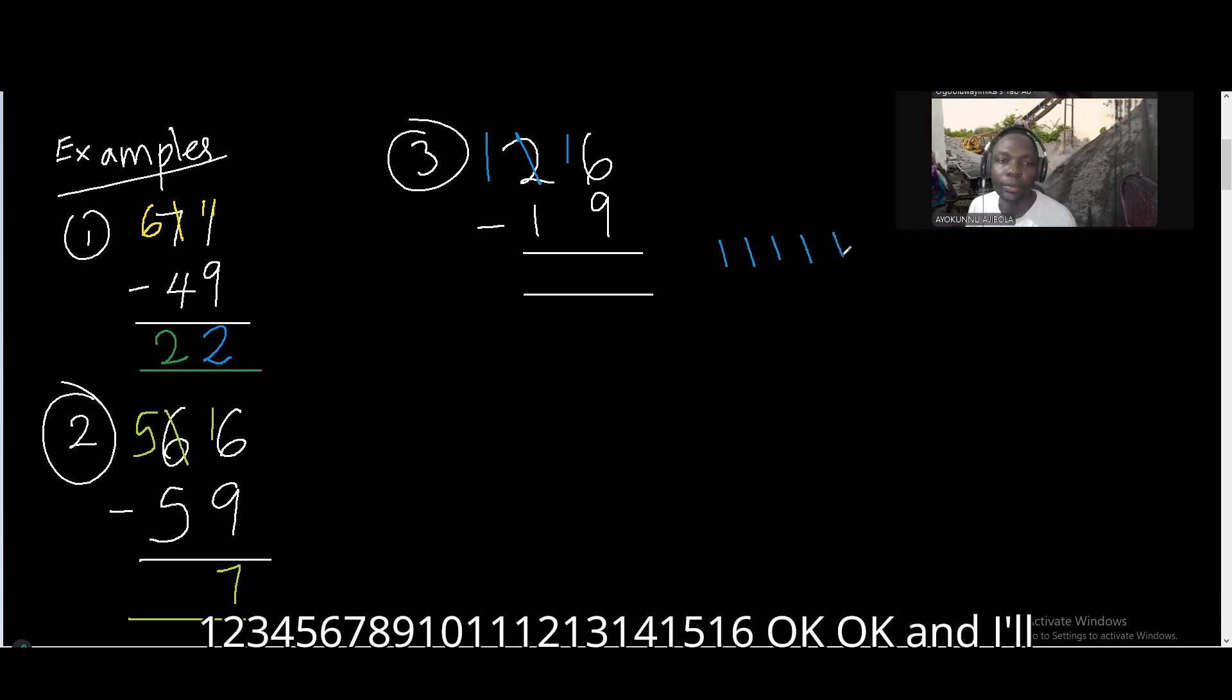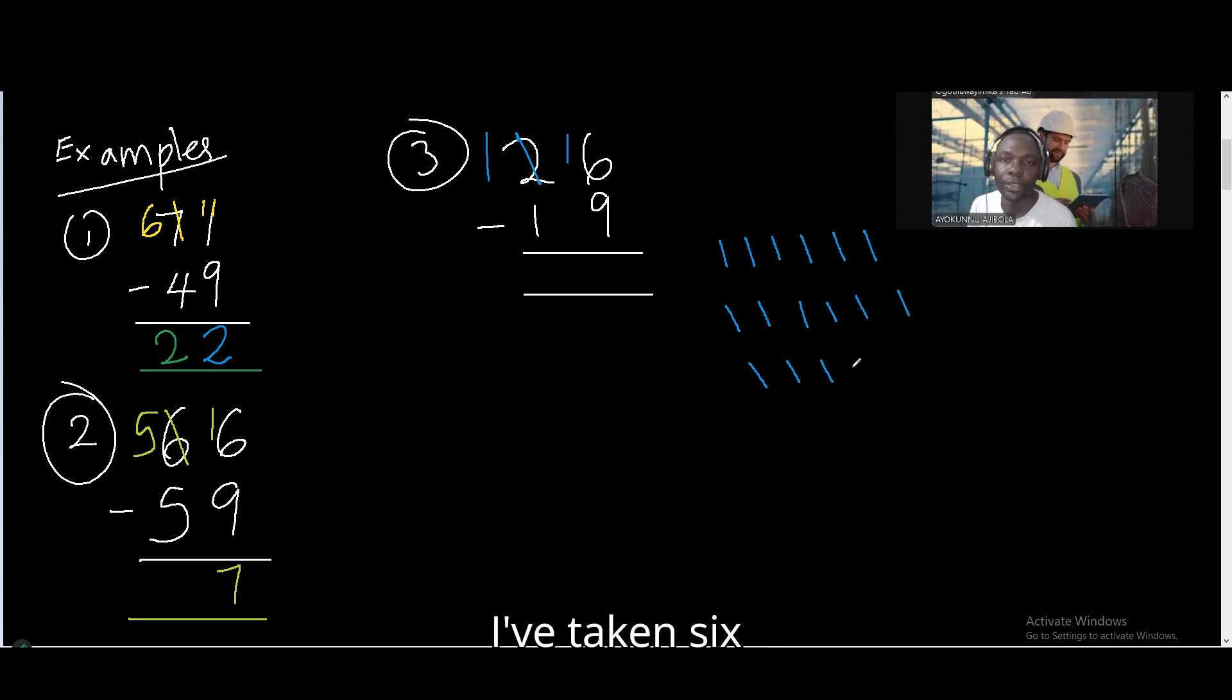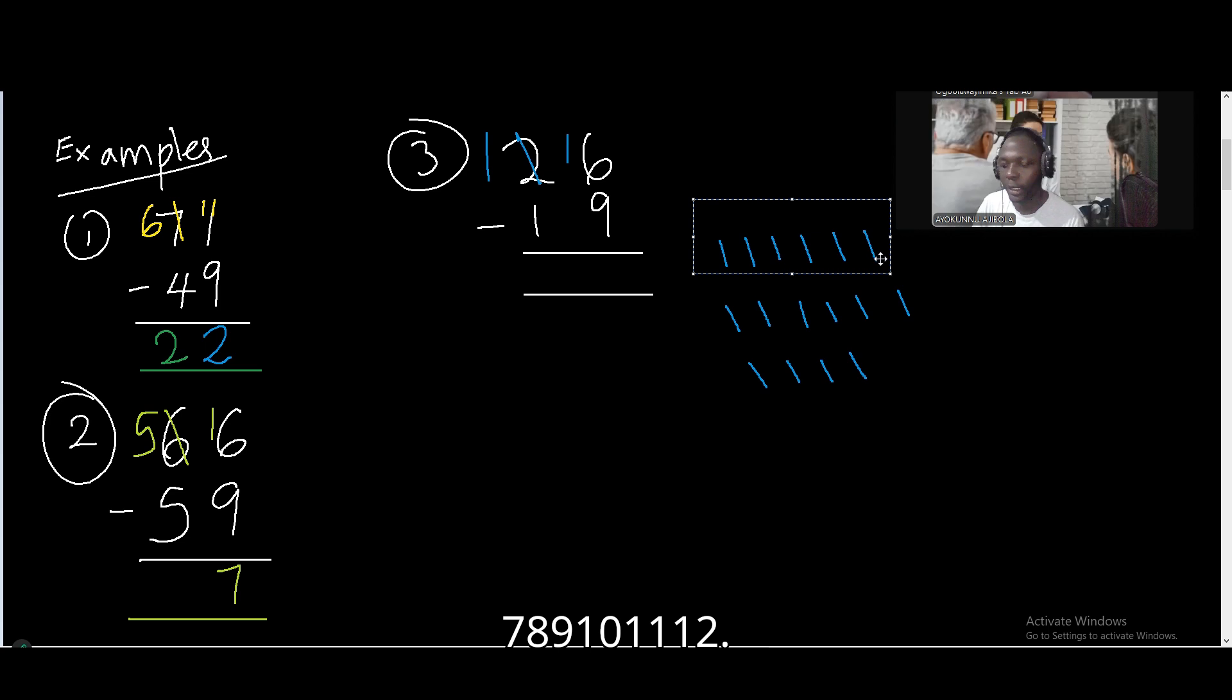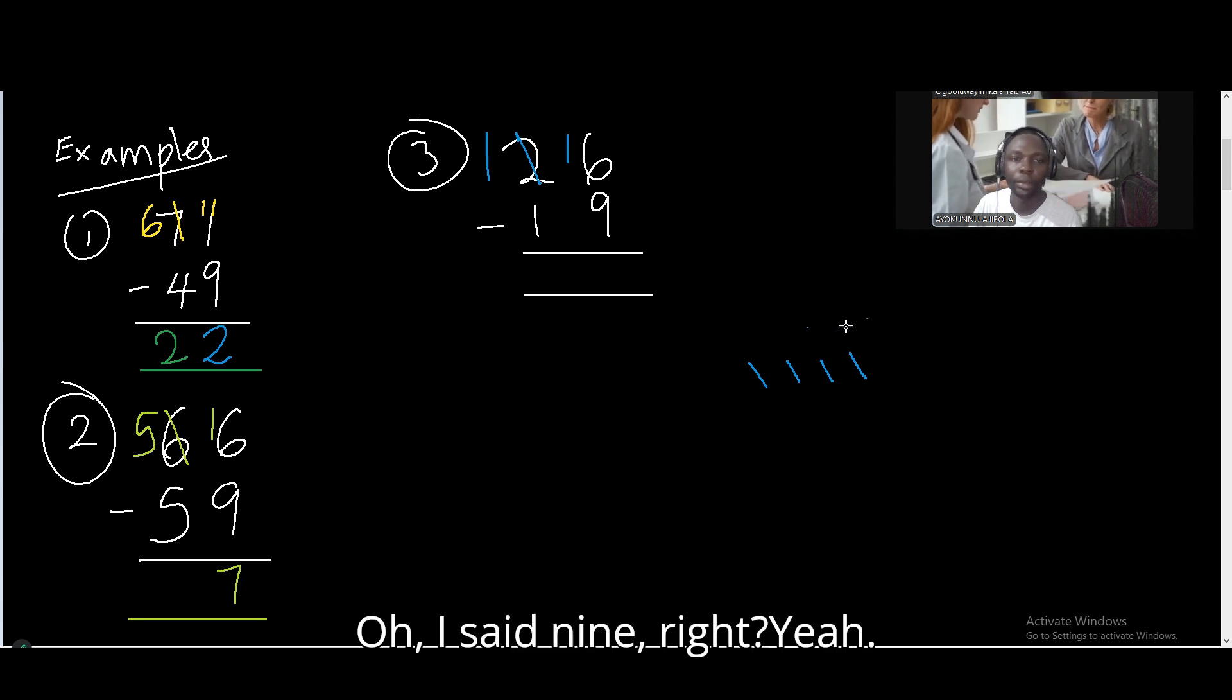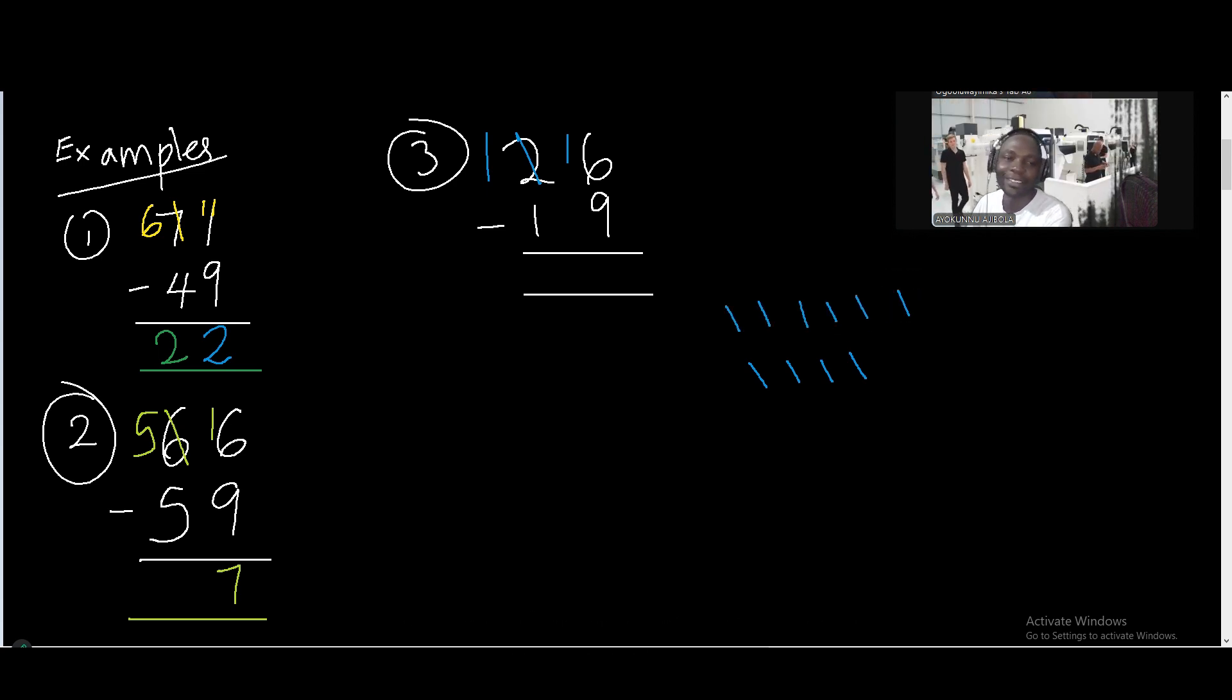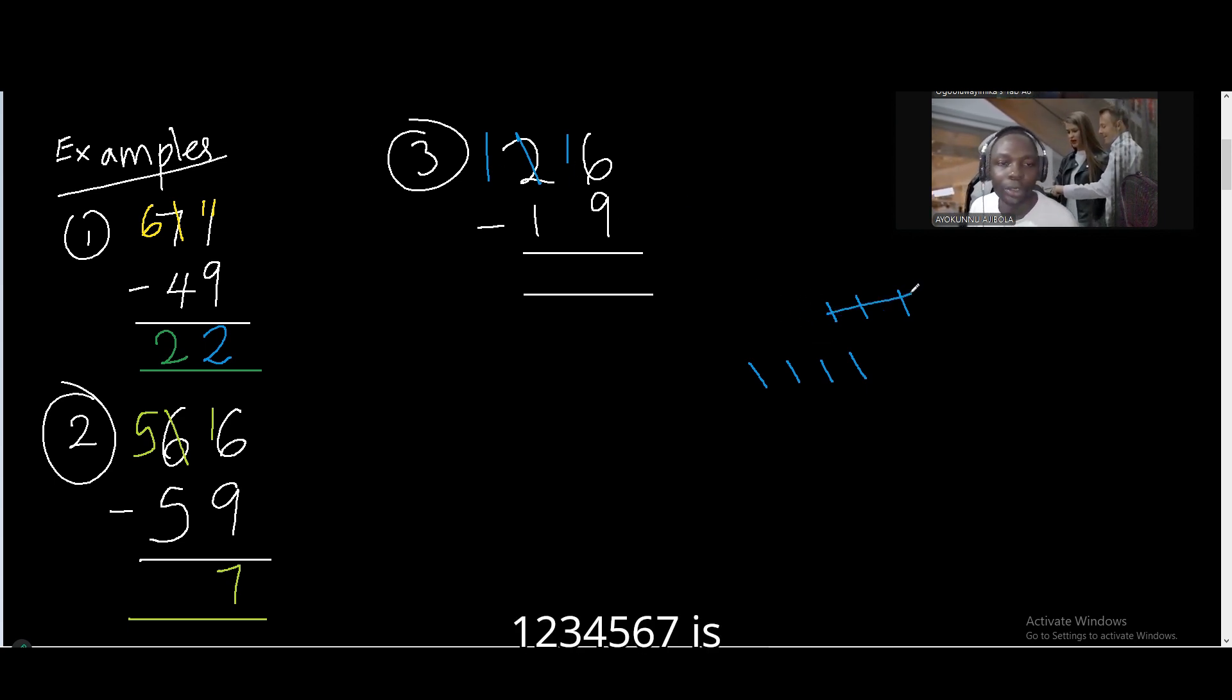So 1, 2, 3, 4, 5, 6, 7, 8, 9, 10, 11, 12, 13, 14, 15, 16. And I'll take away 9. So I've taken 6 away now. 7, 8, 9. Now I remain 3. 7, 8, and 9. So what is the answer? 1, 2, 3, 4, 5, 6, 7. It's 7. Good.